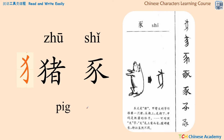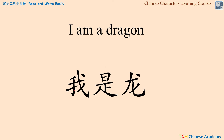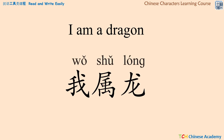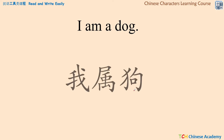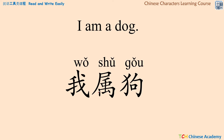Now that we know all the characters for the 12 zodiac signs, how do we say in Chinese 'I was born in the year of the dragon' or 'I'm a dragon'? Can we say 'wǒ shì lóng'? Actually no — the correct Chinese is 'wǒ shǔ lóng.' We use the word 'shǔ' to indicate our zodiac sign, meaning 'I was born in that year.' For example, 'I'm a dog' would be 'wǒ shǔ gǒu.' Now you know this structure and can say all the zodiac signs in Chinese.